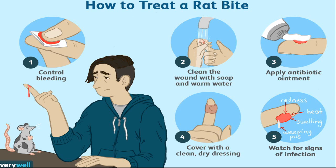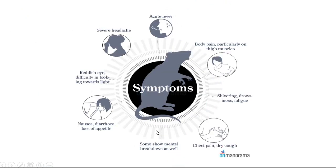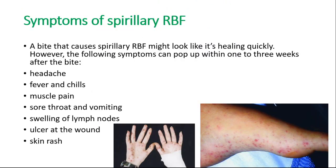How to treat a rat bite: Firstly, control bleeding. Secondly, clean the wound with soap and warm water. Thirdly, apply antibiotic ointment. Fourth, cover with a clean dry dressing. Fifth, watch for signs of infection. You can see all of these steps in these slides.